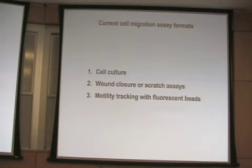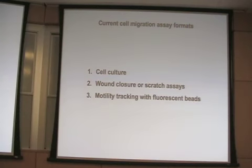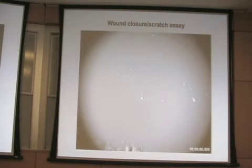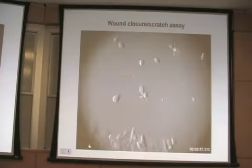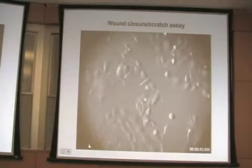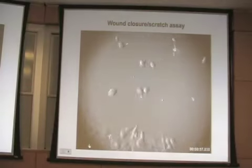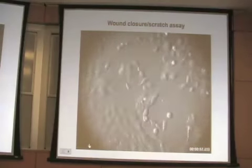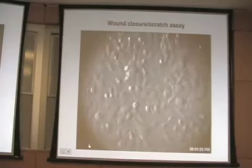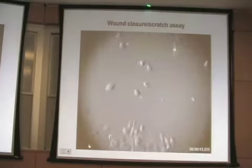And there are some labs that use fluorescent beads to track those cells. The next slide shows one of these classical scratch assays that we have performed. Here you can see how it works over a period of 12 hours. You have the gap, and you can see that single cells start to migrate into this gap, and over time the gap is closed by cells moving into it.